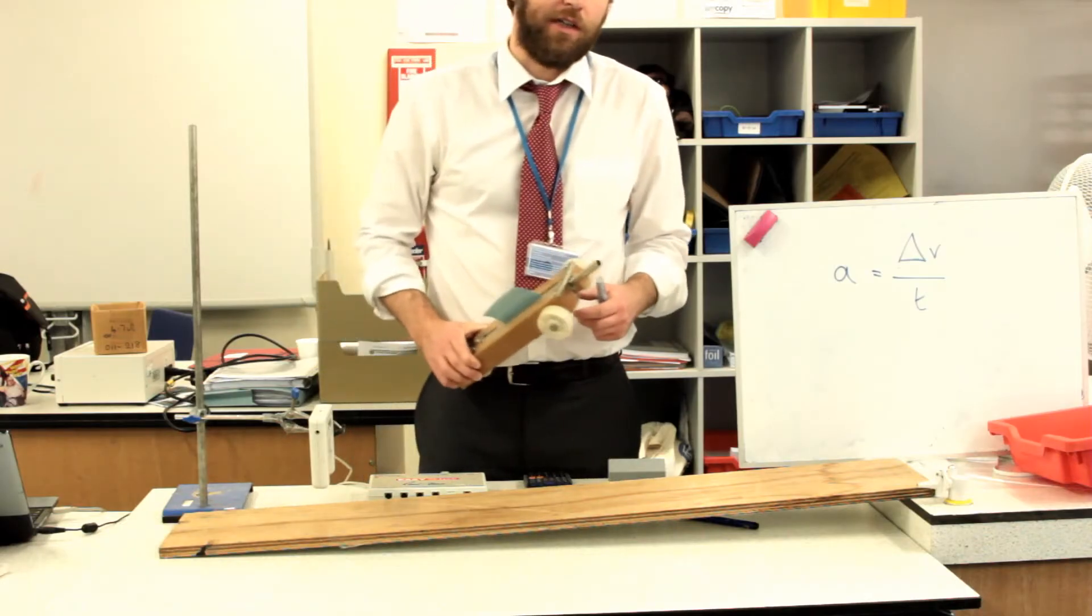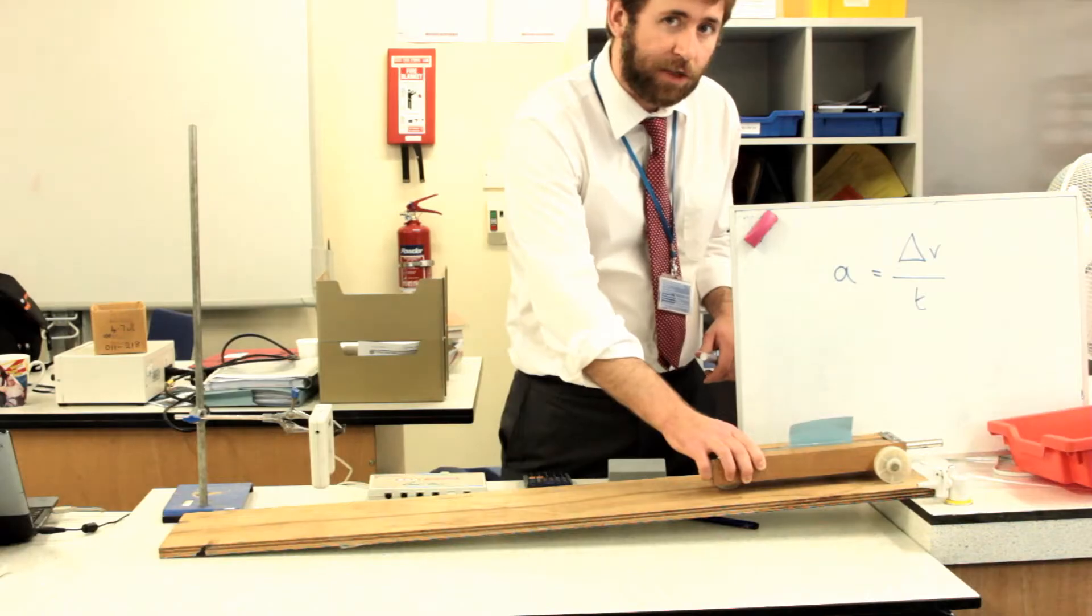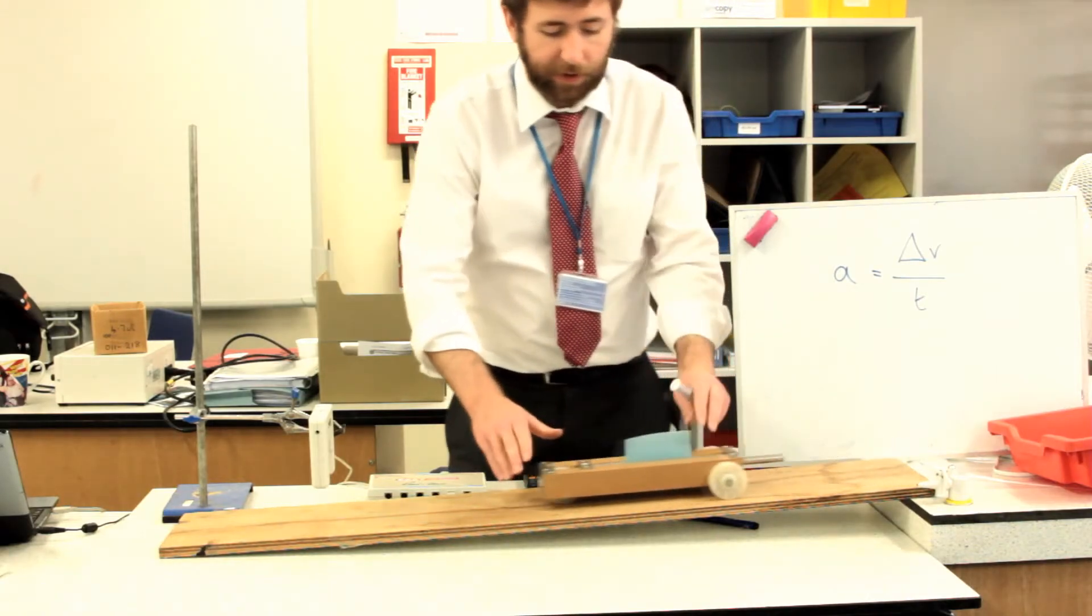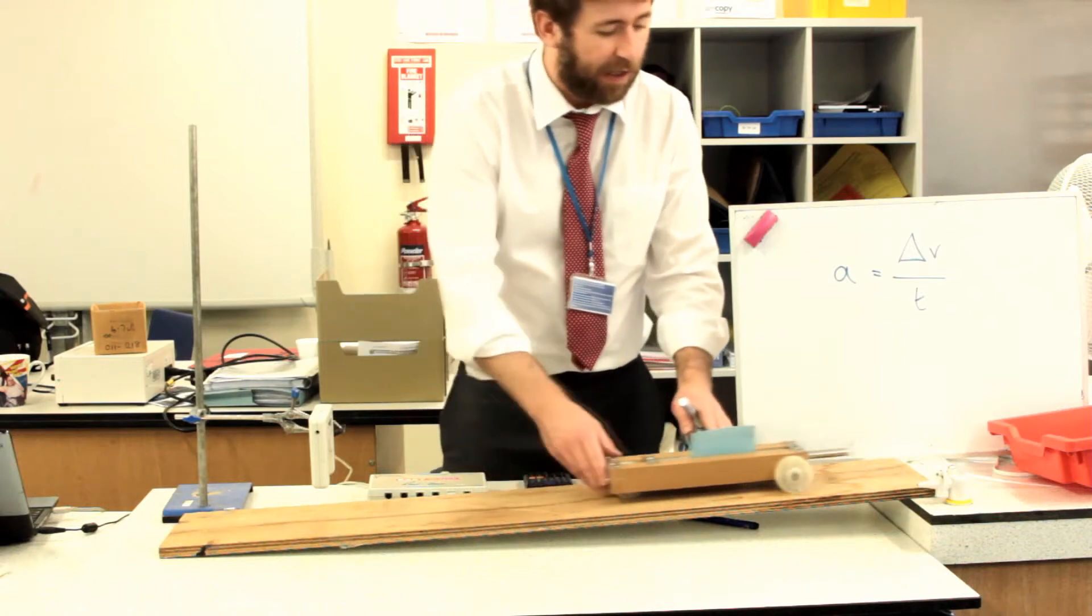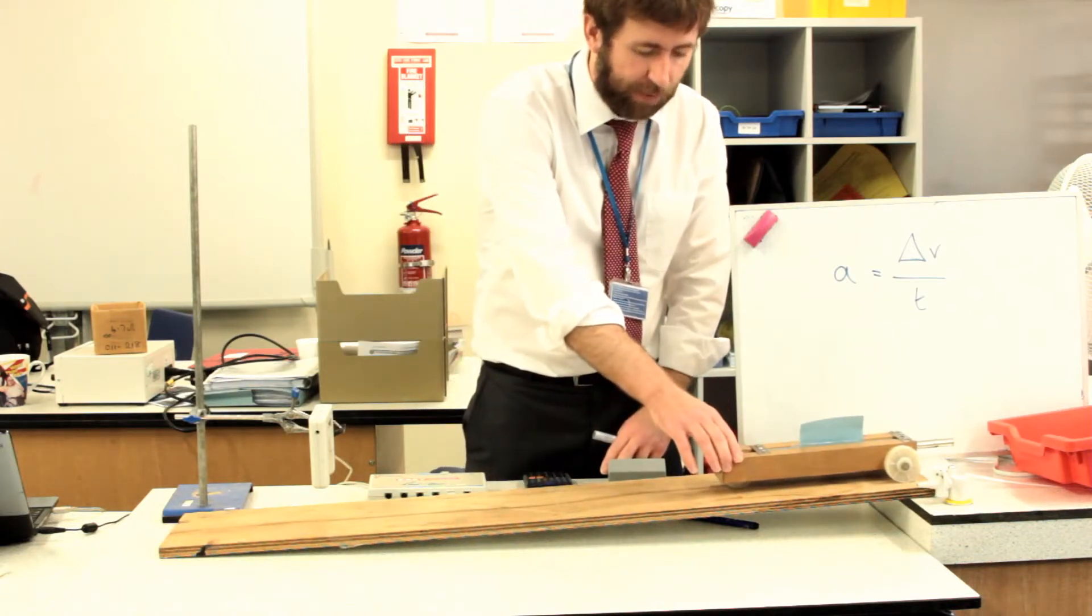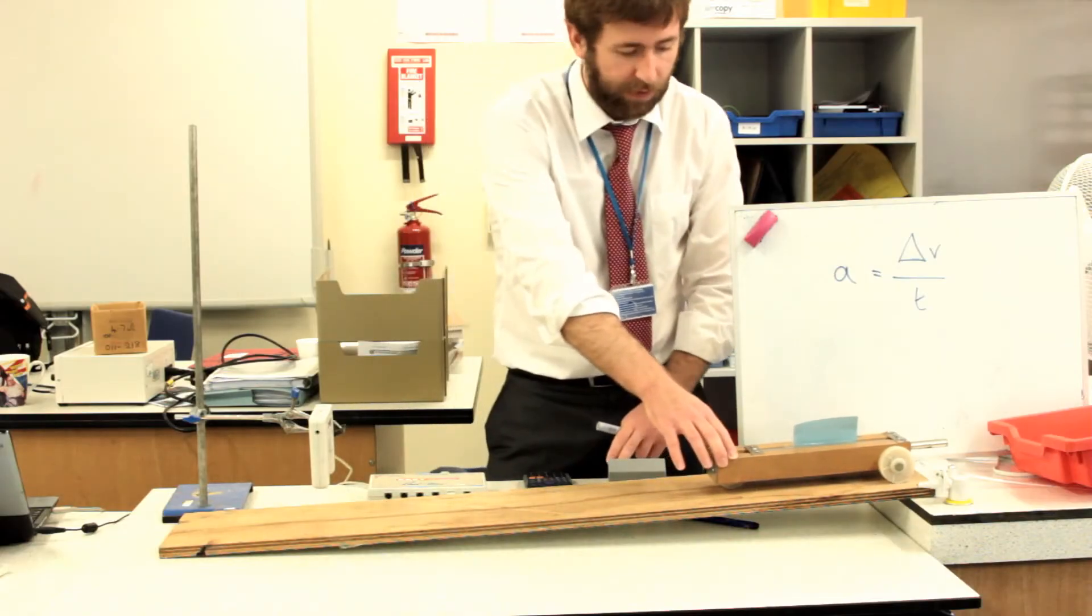And it will very quickly calculate the speed for me, so I don't need to do anything with that. I know it's starting from 0, so the change in speed will be from 0 to whatever that is. And I'm going to manually measure the time from when I let go to when the card goes through the gate. So here we go.